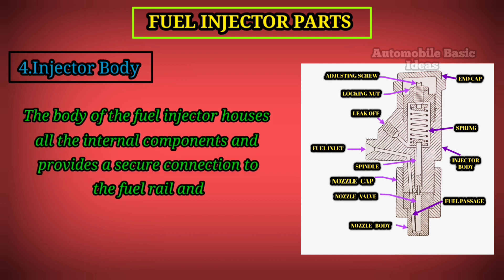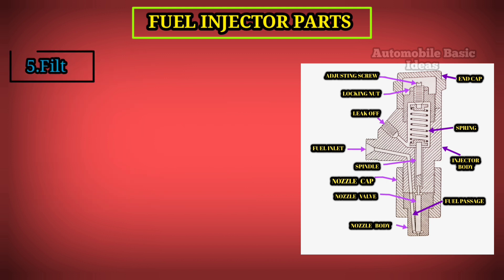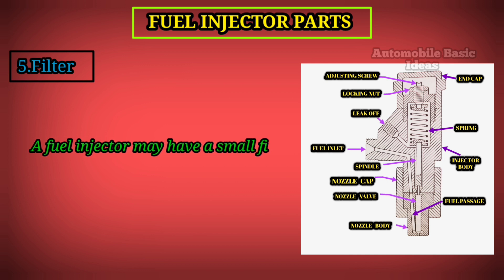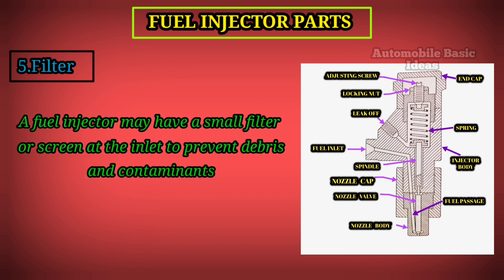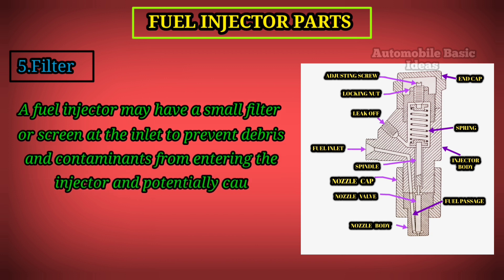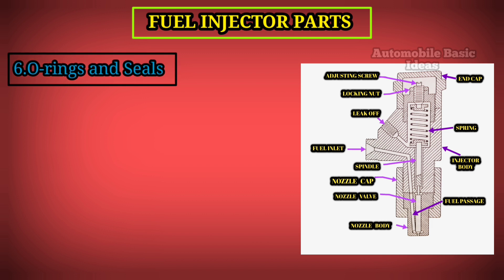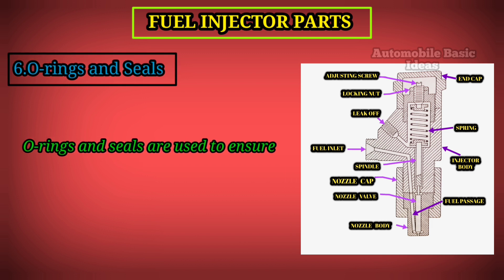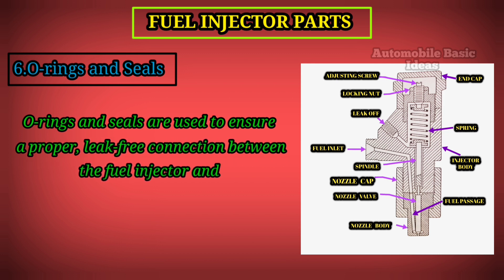4. Injector Body. The body of the fuel injector houses all the internal components and provides a secure connection to the fuel rail in the engine's intake or combustion chamber. 5. Filter. A fuel injector may have a small filter or screen at the inlet to prevent debris and contaminants from entering the injector and potentially causing blockages or damage.